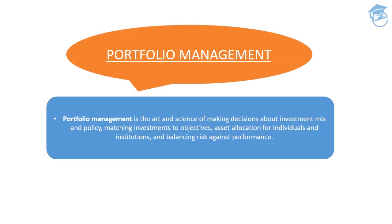What do I mean by portfolio management? That should be the first thing that comes to your mind once we decide on taking up this chapter. Portfolio management is basically the art and science of making decisions about investment mix and policy, matching to your objectives. You need to do asset allocation for individuals or different institutions, and thereby adjust your investments, balancing risk against performance. The first key decision is which securities you need to invest in.